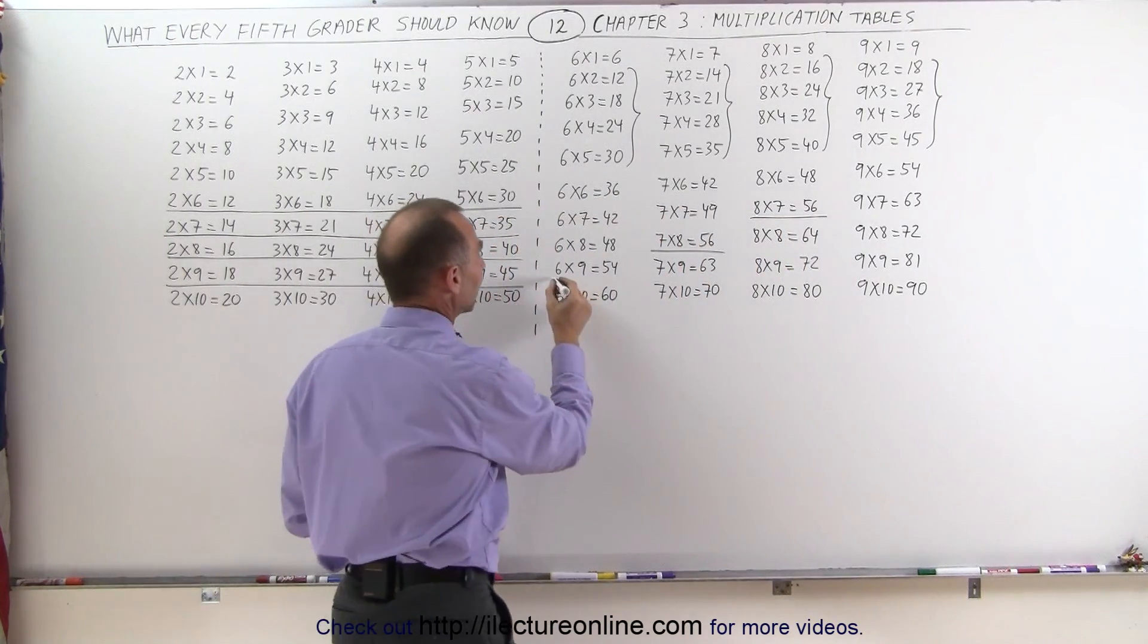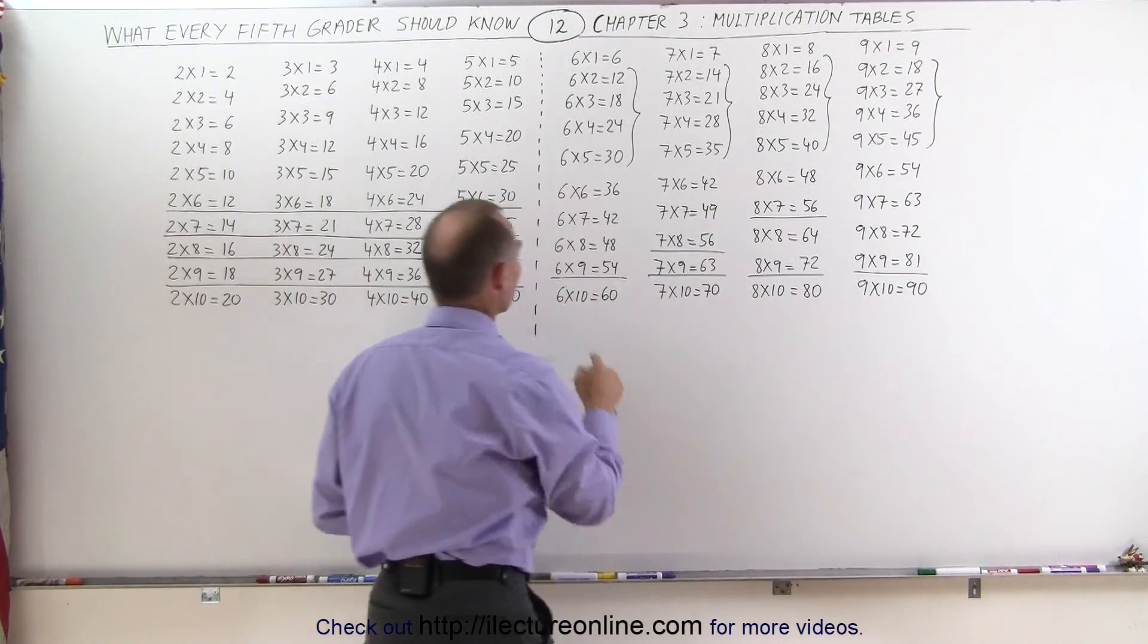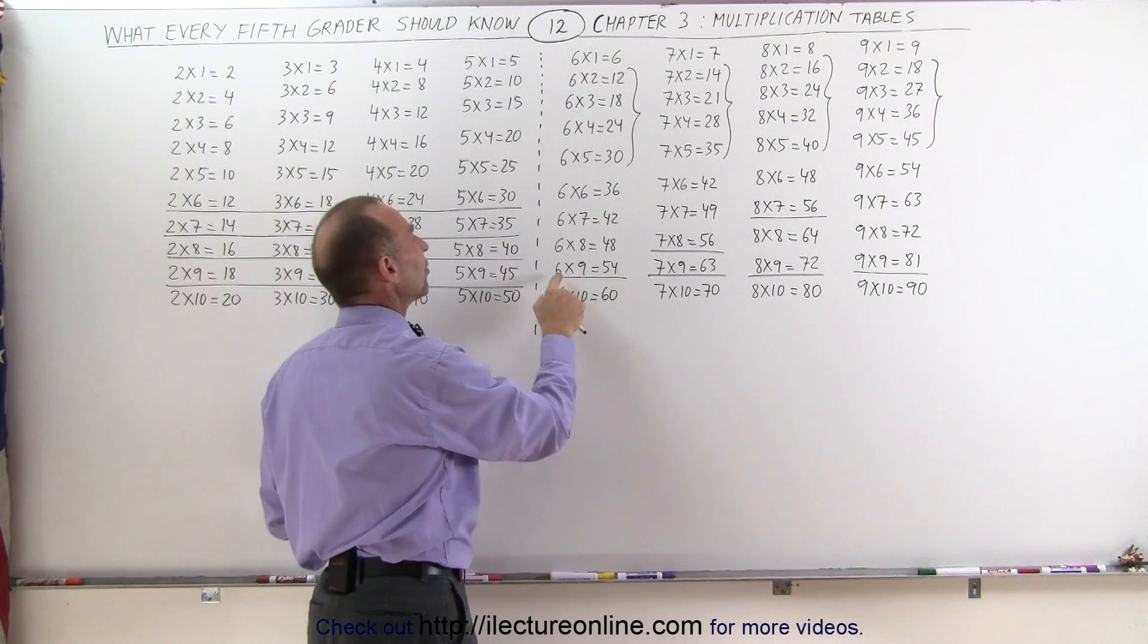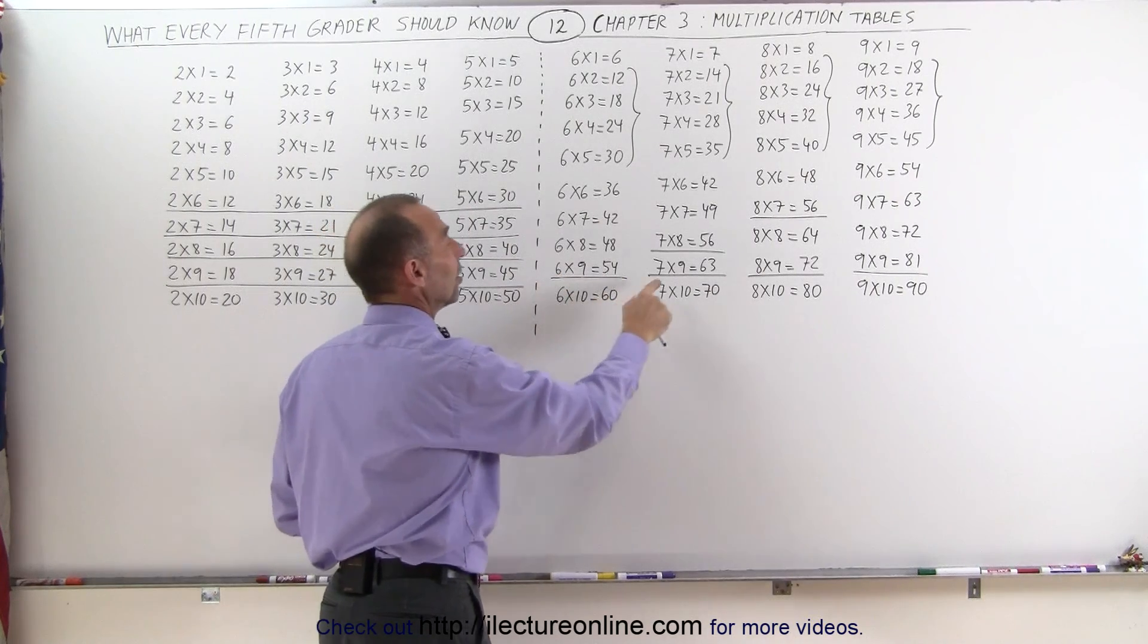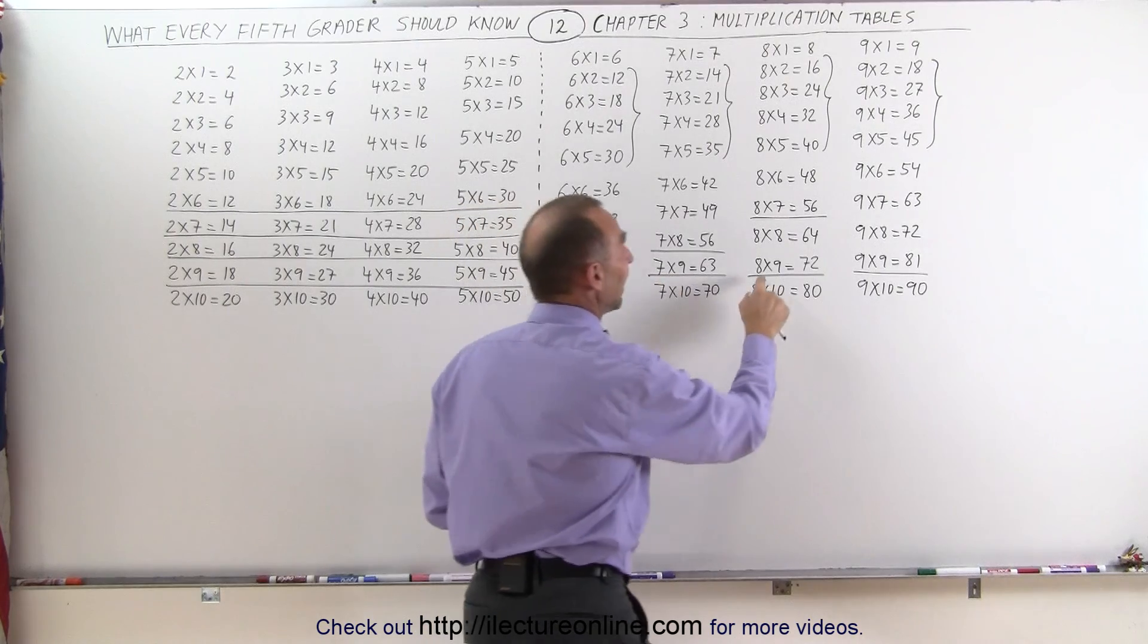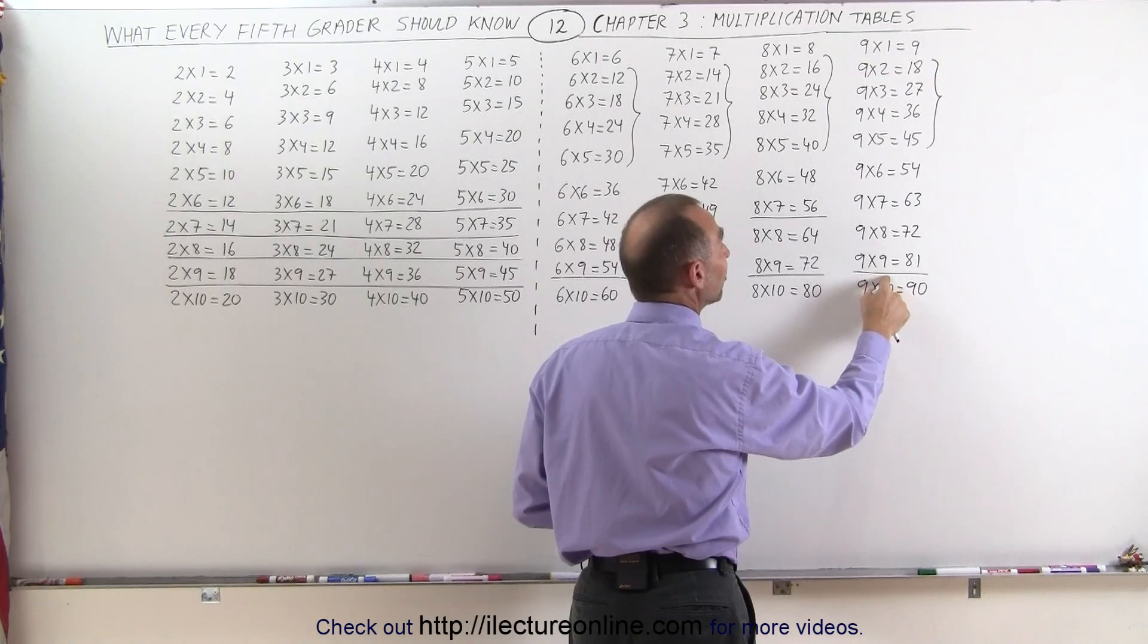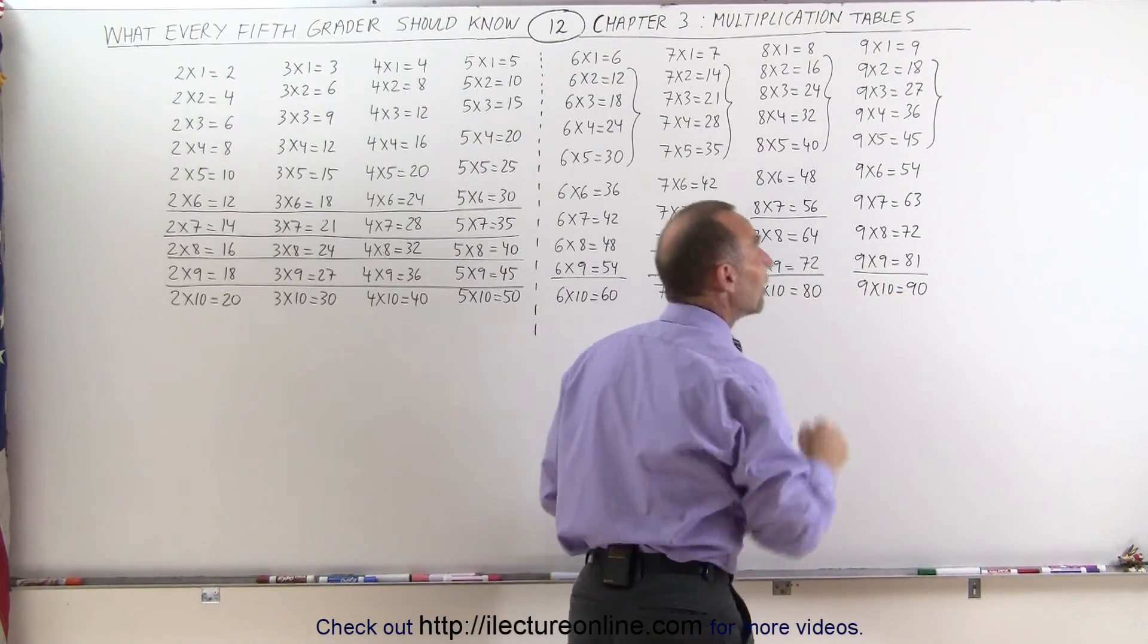Notice whenever you multiply times 9, you simply multiply times 10 and subtract that number from it. 6 times 9 is the same as 6 times 10 minus 6. 7 times 9 is the same as 7 times 10 minus 7. 8 times 9 is the same as 8 times 10 minus 8. And 9 times 9 is the same as 9 times 10 minus 9.